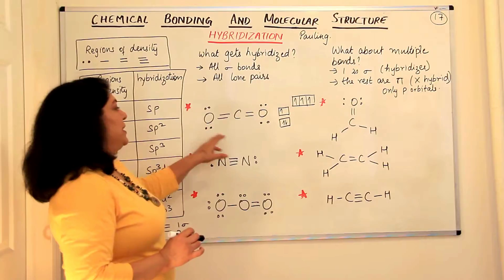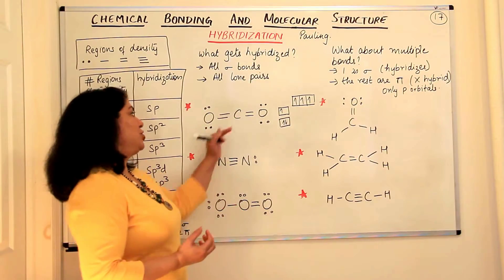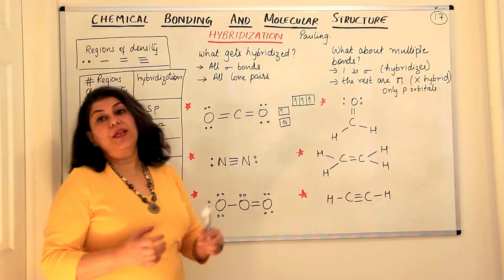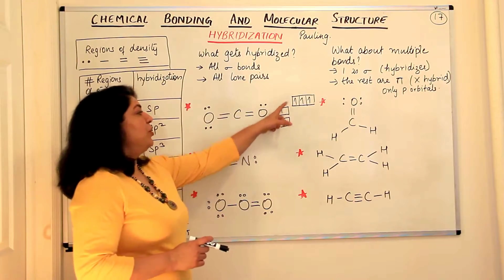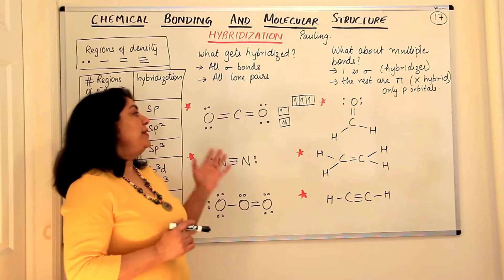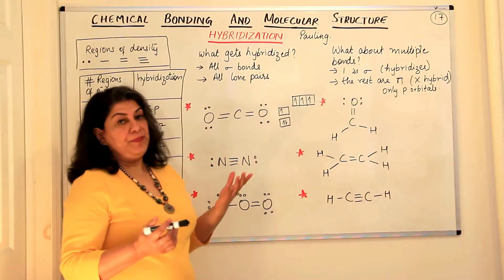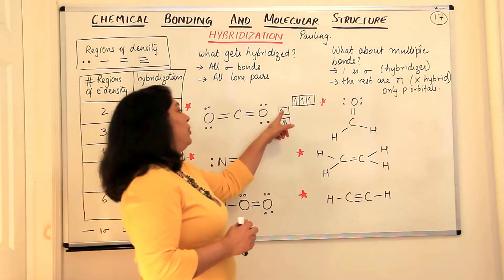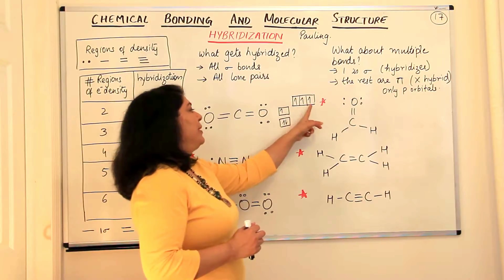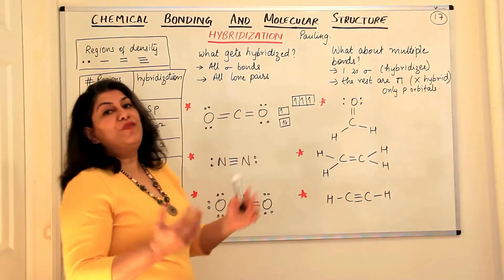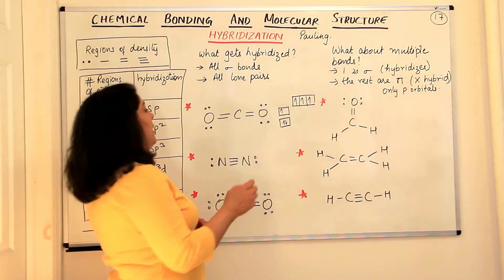The first example is carbon dioxide. How do we find out the hybridization of carbon and oxygens in CO₂? If you take a look at the electronic configuration of carbon in the excited state, it is 1s², 2s¹ and 2p³. One electron from 2s² jumps up to 2p to make four orbitals available for bonding.